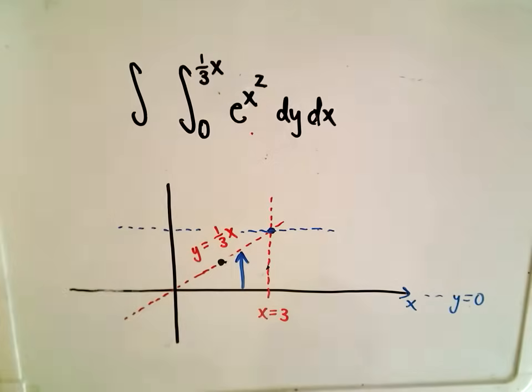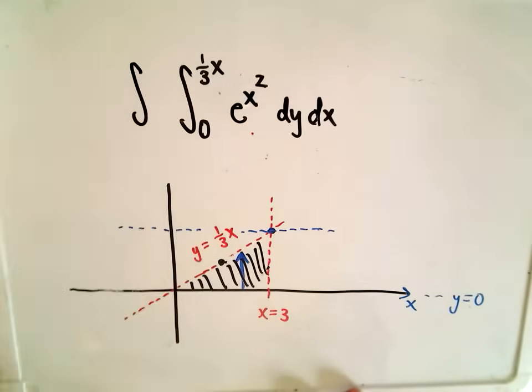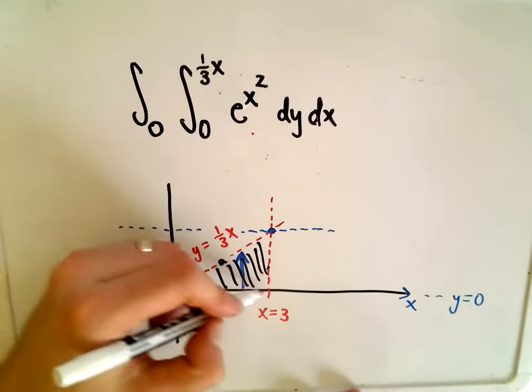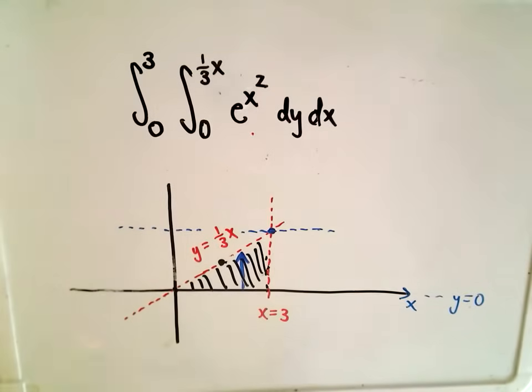Now for the x-coordinates, I think over that region, what's the smallest x-coordinate that I use? Well, the smallest x-coordinate I use would be 0, but the largest x-coordinate that gets used would be 3. So now we've switched out the limits of integration, and we simply need to integrate this.